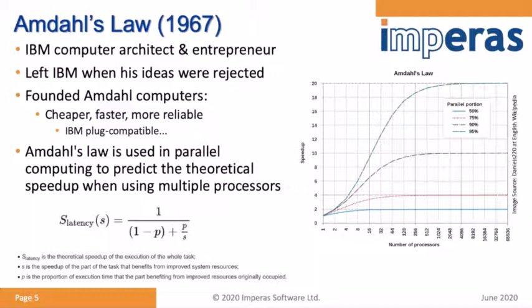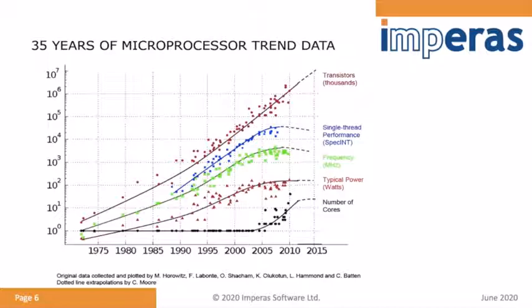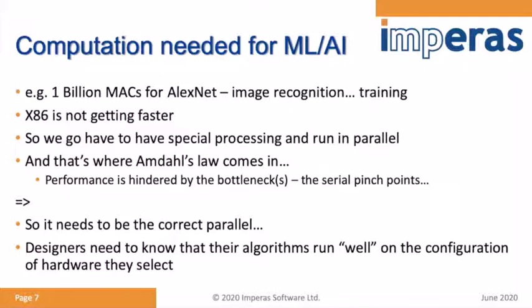Let's get started with architectural analysis. Amdahl's Law shows that as you scale a single-thread performance across a parallel architecture of processors, there are diminishing returns based around bottlenecks of key operations that can't scale beyond that single thread. Over 35 years of processor innovation under Moore's Law, single-thread performance peaked around 2005 — the era of multi-core adoption.